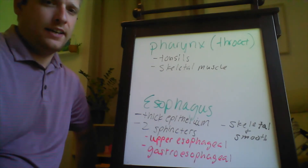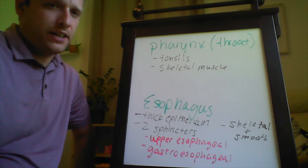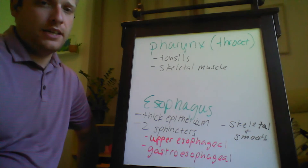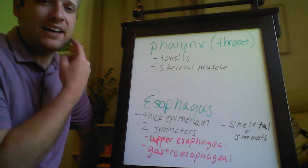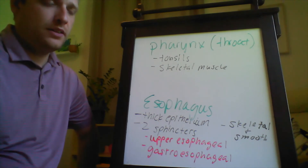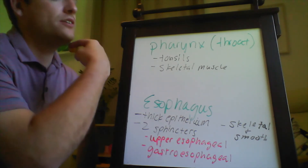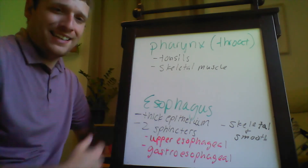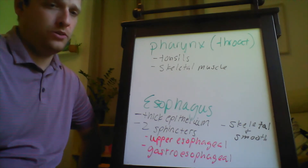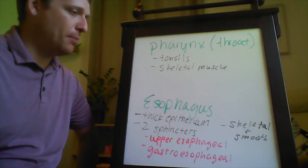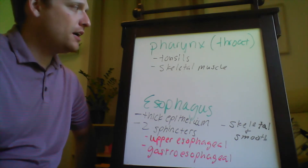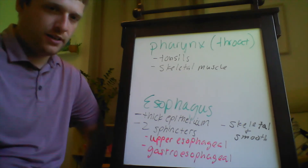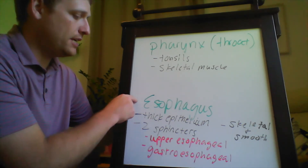Next in our journey is the pharynx and esophagus. The pharynx, also called the throat, consists of the oropharynx (the back of the mouth) and the laryngopharynx (further down toward the esophagus). The oropharynx contains tonsils that trap pathogens and are part of the lymphatic and immune system. The pharynx has a skeletal muscle component that assists in propelling the bolus of food down toward the esophagus.